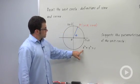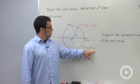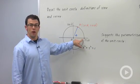We drew a unit circle, which is the circle x squared plus y squared equals 1. It's centered at the origin and it's got radius 1.